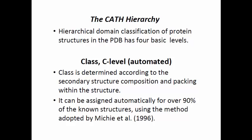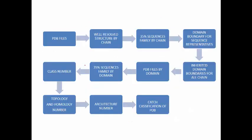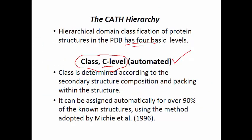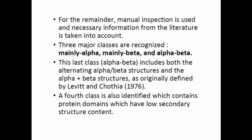Proteins in PDB are classified into four basic hierarchical levels. The first hierarchical level is Class — that is C in CATH. At this class level, classification is mostly automated. The secondary structure of the protein is predicted from the amino acid sequence — about 90% of the structure is automatically defined based on the amino acid sequence using certain software.